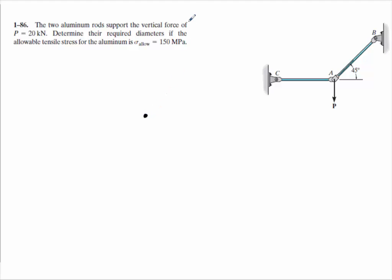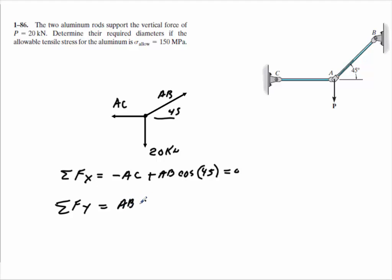Again, just get a nice free body diagram. You come down, you come up here like this. Your load would be 20 kilonewtons here. We'll call this AC, we'll call this AB. This angle is 45 degrees. So if I'm going to solve that, I'm going to solve it in two ways. I'm going to sum my forces in the x direction. If I do that, I'll get minus AC plus AB cosine 45 equals zero. I sum my forces in the y direction. If I do that, I'll get AB sine 45 minus 20 is equal to zero.